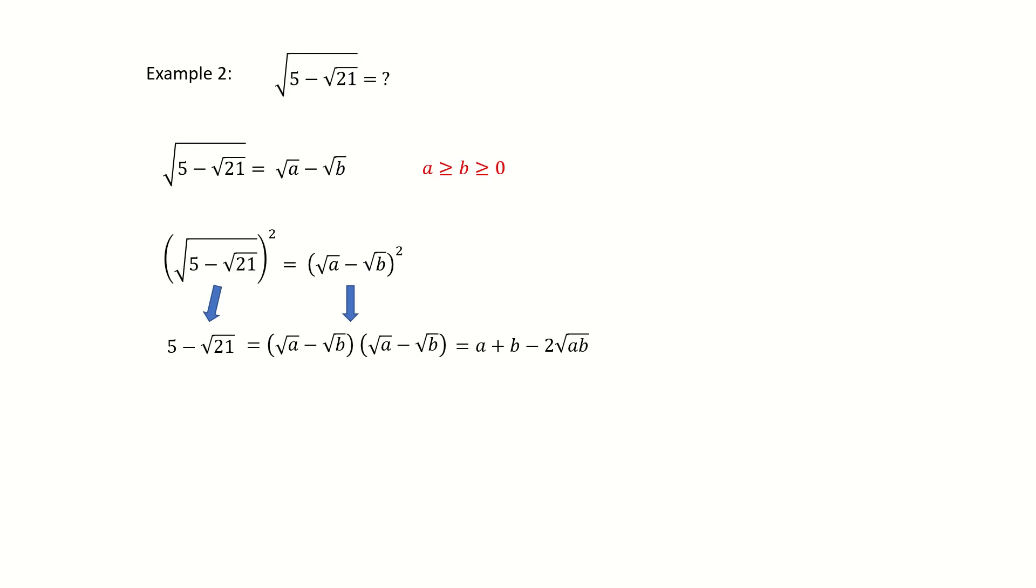Again, we follow the same procedure here. Then we got two equations. But note here, there is a factor 2 outside the square root. So we need to put the factor 2 inside square root. Then we get these equations.